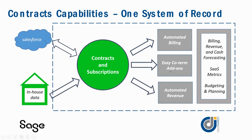Easy contract term changes support adding or de-booking lines for an existing contract, associating a project with a contract line, renewing a contract, and automating reversal entries upon contract cancellation. Automated revenue is ASC 606-compliant, supports multi-element arrangements, and differentiates unbilled and unearned versus unbilled and earned. We can also have billing, revenue, and cash forecasting, SaaS metrics, and budgeting and planning by the contract.